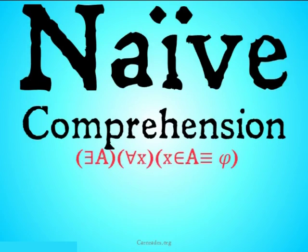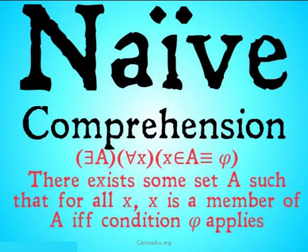The naive comprehension principle, once again, is there exists some set A such that for all X, X is a member of A if and only if condition φ applies. Basically, what this is saying is condition φ is how we would know if something's a member of the set A or not. X is a member of that set, and A is the set itself.